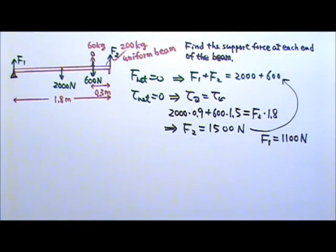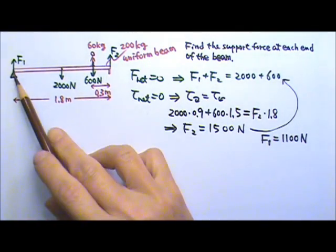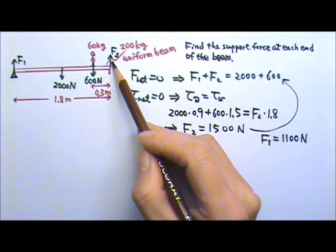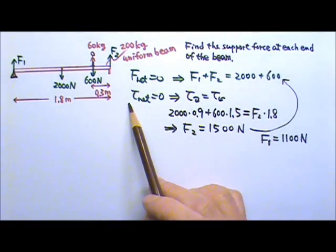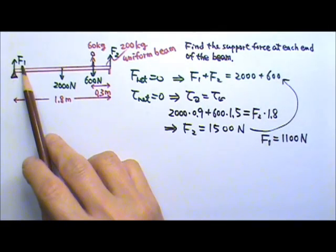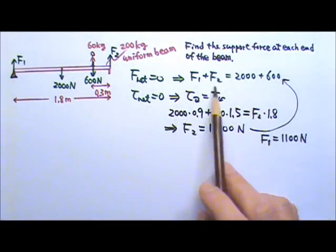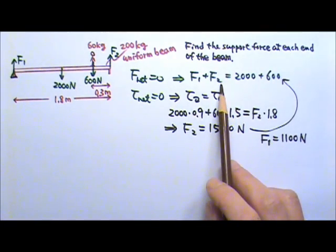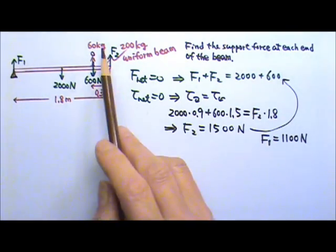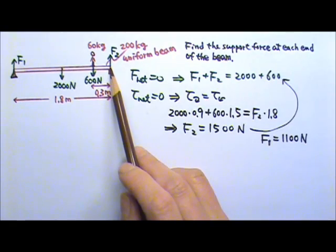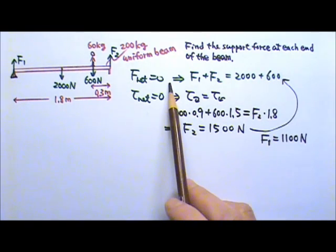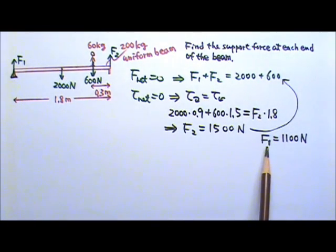Of course, if I prefer, I can also choose the axle at F2. That is just as convenient because in that case, F2 gives no torque and won't appear in the net torque equation, allowing us to find F1 first. Then we can write the net force equals zero to solve for F2. Or, we can first choose the axis at F1 to solve for F2, then choose the axis at F2 to solve for F1, without needing to write the net force equation at all.